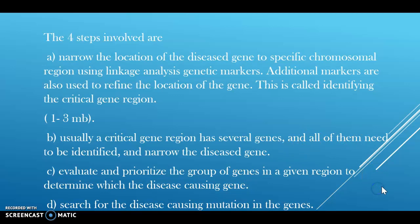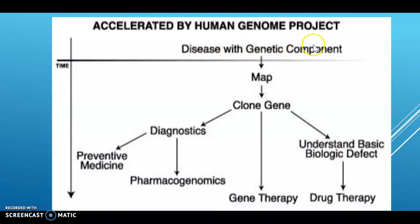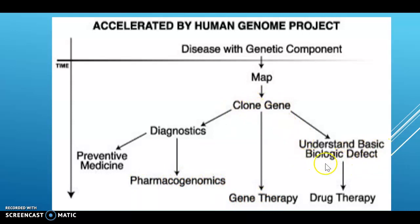This process is accelerated by the human genome project. Diseases with a genetic component are mapped, from which the cloning of the gene is done, then the gene is identified and cloned. That cloned gene is used for diagnostic and preventive medicines — either as a diagnostic tool, in pharmacogenomics, or in gene therapy. It is also used to understand the basic biological defect so that it can be used as a drug therapy. However, it is practically critical to carry out cloning of genes at the genetic level, and this variation is very difficult to perform, so it needs further modification.